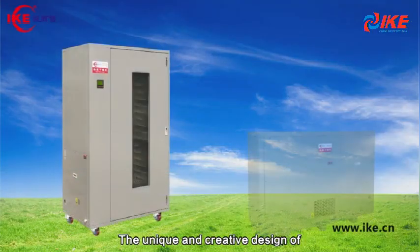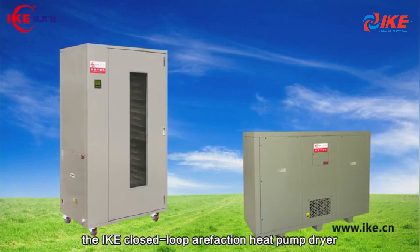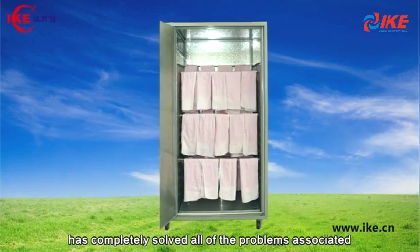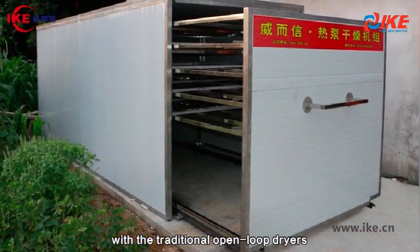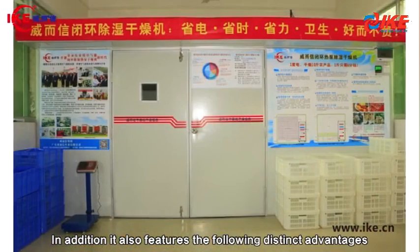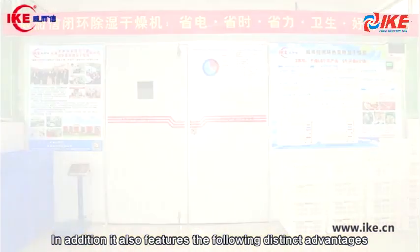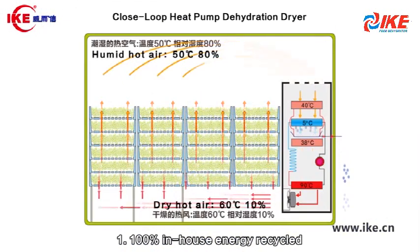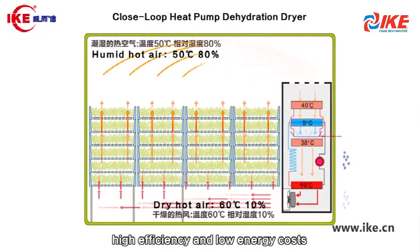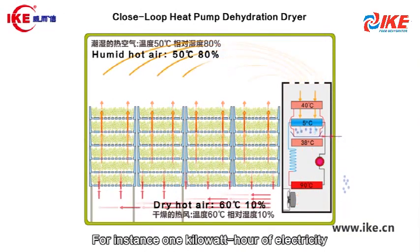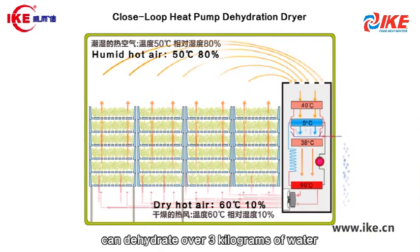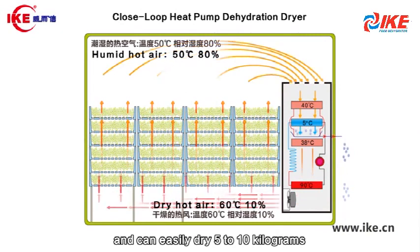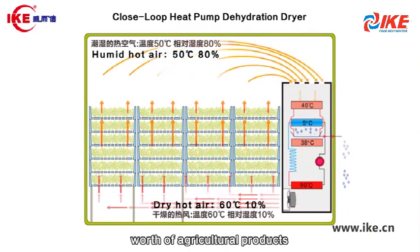The unique and creative design of the IKE closed-loop air-faction heat pump dryer has completely solved all of the problems associated with the traditional open-loop dryers. In addition, it also features the following distinct advantages. First, 100% in-house energy recycled, high efficiency and low energy costs. For instance, 1 kilowatt-hour of electricity can dehydrate over 3 kilograms of water, and can easily dry 5 to 10 kilograms worth of agricultural products.